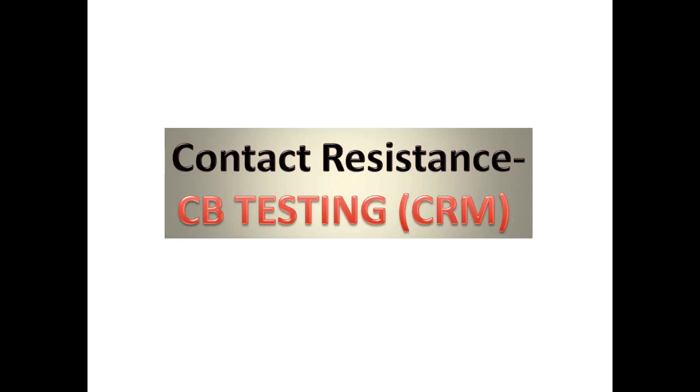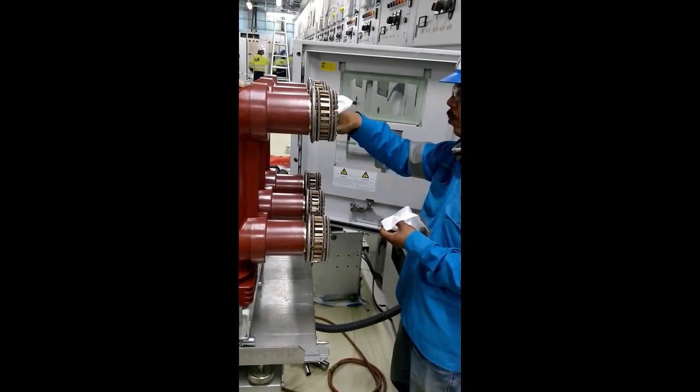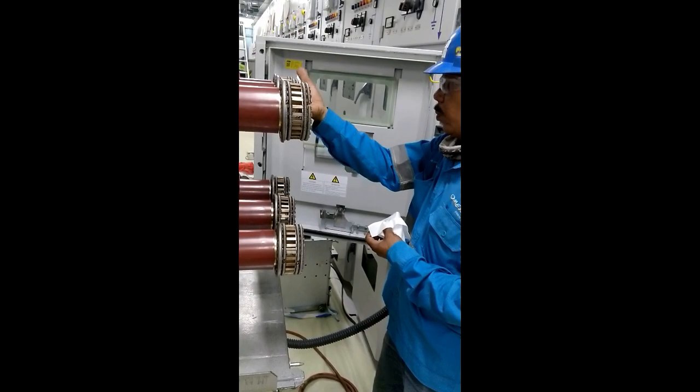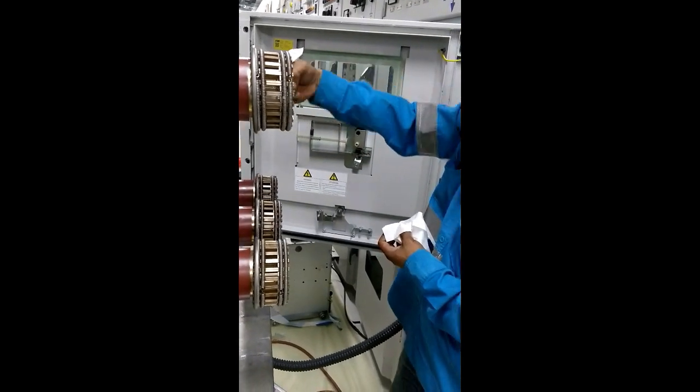First we have to rack out the CB from the module and we have to clean the contact with white cotton.